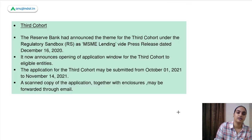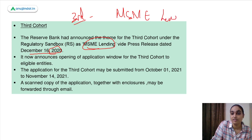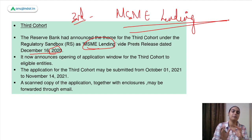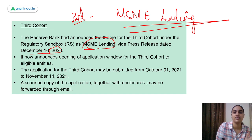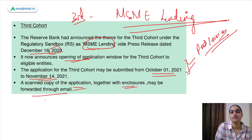Talking about the third cohort — its theme was also announced in December 2020 and the theme was MSME Lending. So the first cohort's theme was retail payments, the second was cross-border payments, and the third was MSME lending. Although the theme was announced in 2020, the application window was not open at that time. Now RBI has opened that window — the application window will be open from October 1st to November 14th. Companies wanting to test their products and services can apply by submitting a scanned copy of their application and necessary enclosures via email.